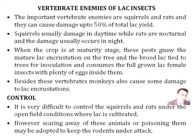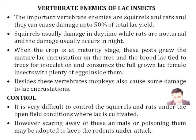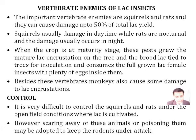Vertebrate enemies are another problem in lac culture. Squirrels, rats, and monkeys can cause damage up to 50 percent of total lac yield. Squirrels usually damage in daytime while rats are nocturnal and cause damage during nighttime. When the crop is at maturity stage, these pests gnaw the mature lac incrustation on the tree and consume the fully grown lac female insect with eggs inside. Monkeys can also cause some damage to lac incrustation. It is very difficult to control vertebrate enemies of lac insects. Some control methods are scaring these animals or poisoning them.